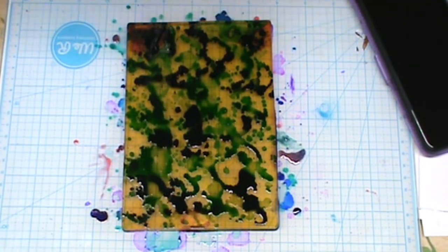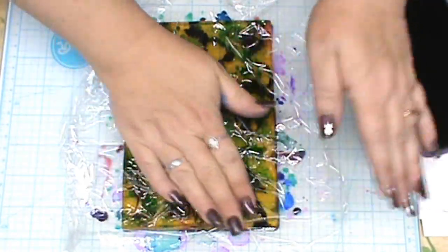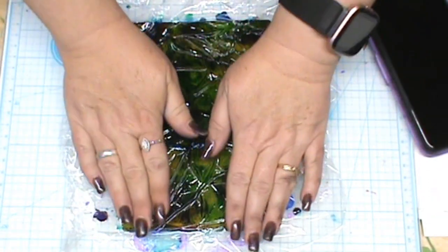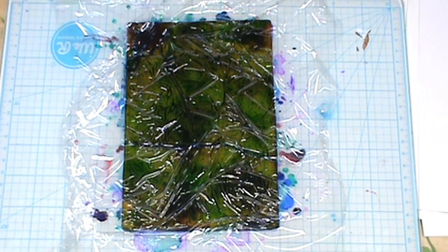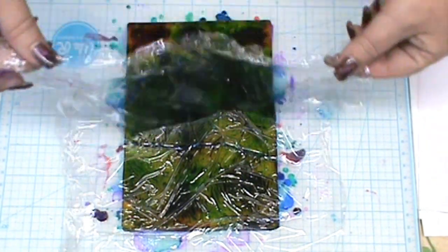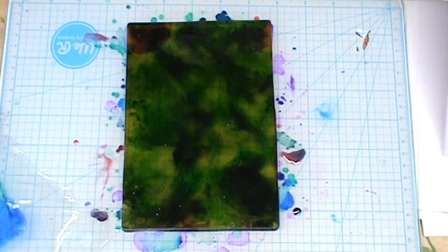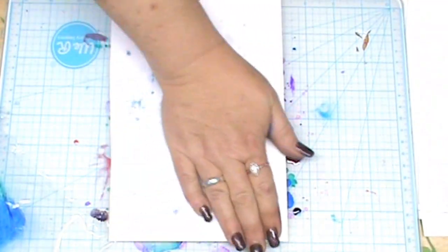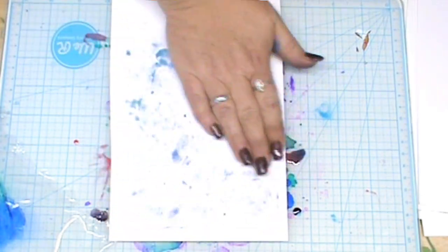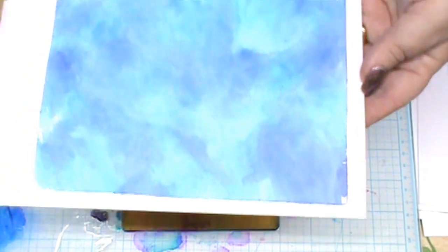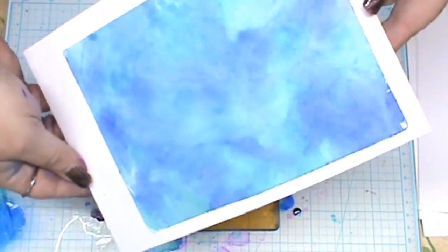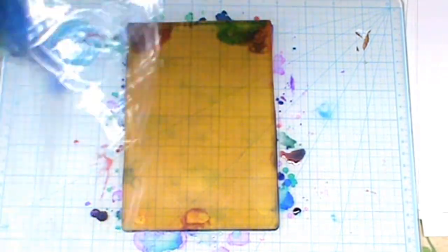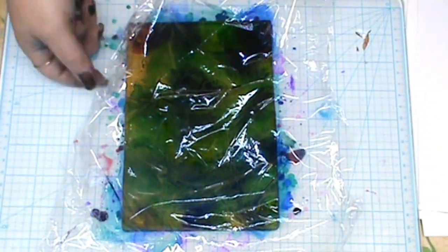Now I will grab my plastic wrap and pop that on there. Smooth it out just to make sure the whole gel plate is covered. Pop the plastic wrap off, grab my sheet of paper, and smooth it down over it. And look at that one, beautiful. I absolutely love the blues of color you get. Just reminds me of the sky.